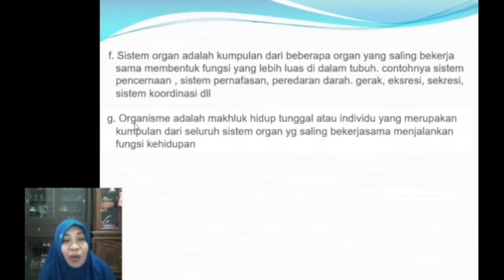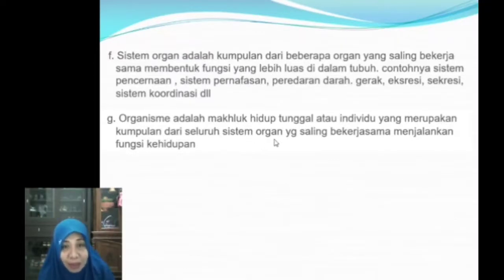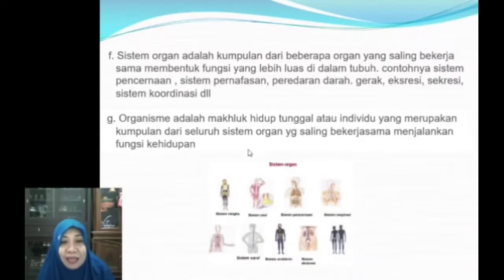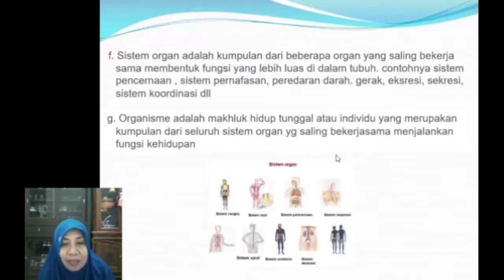Berikutnya adalah organisme. Organisme adalah makhluk hidup tunggal, nama lain dari organisme adalah individu, yaitu kumpulan dari seluruh sistem organ yang saling bekerja sama menjalankan fungsi kehidupan. Contoh sistem organ antara lain sistem rangka, sistem otot, sistem pencernaan, sistem respirasi atau pernafasan, sistem saraf, sistem endokrin, dan beberapa jenis sistem organ yang lain.